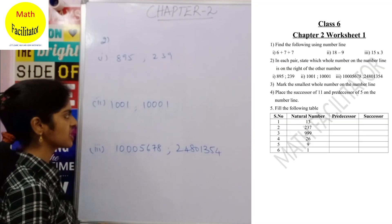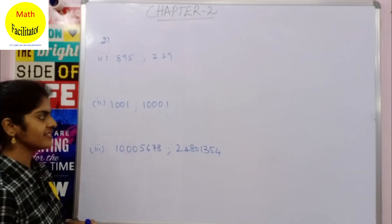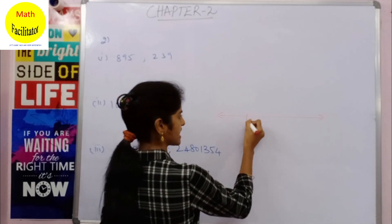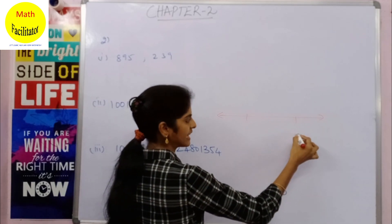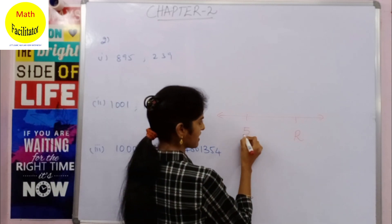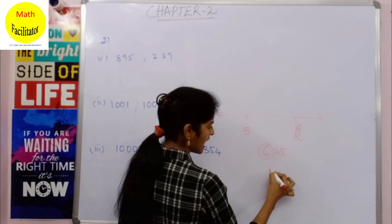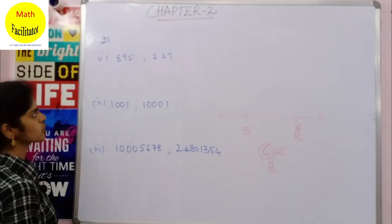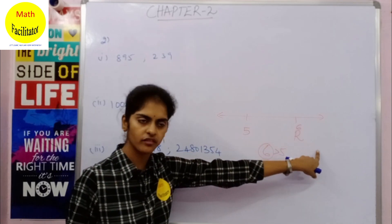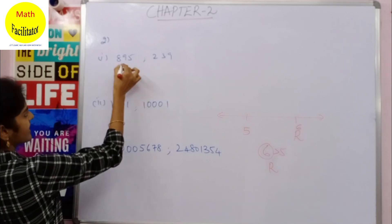Moving on to the next question: you have to find which number is to the right of the other on the number line. On the number line, the number which is greater is always to the right of the other number. For example, 6 is greater than 5, so 6 is to the right side of 5. The bigger number always lies to the right side of the other number on the number line.